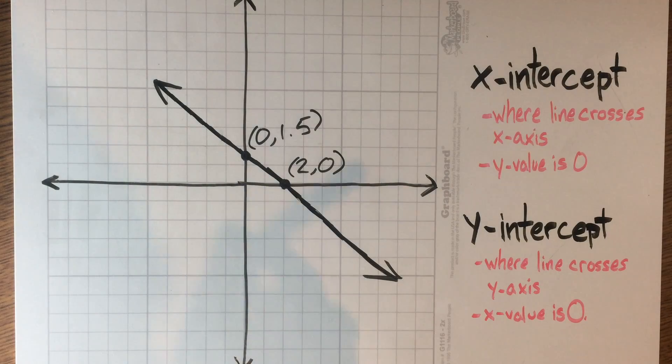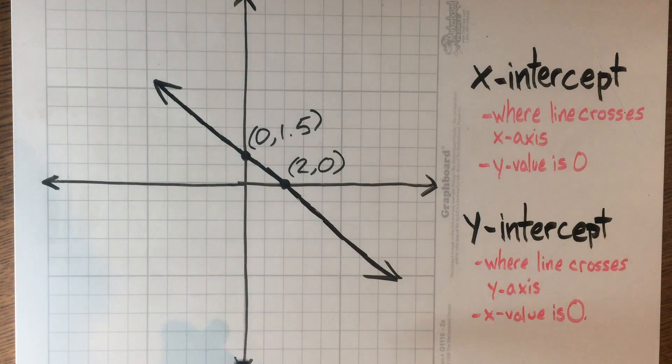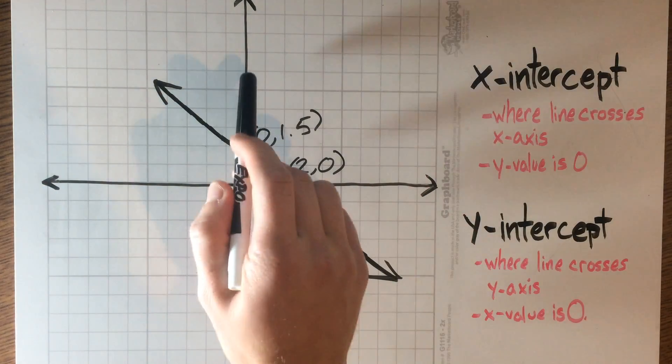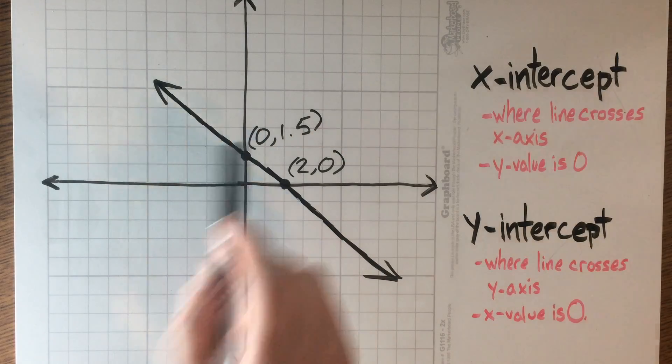The same thing goes but reversed for the y-intercept. So when we're referring to the y-intercept, it's going to be somewhere along the y-axis. It's never going to go left or right, or else it will no longer be on this line. Therefore, the x-value of a y-intercept must always be 0.